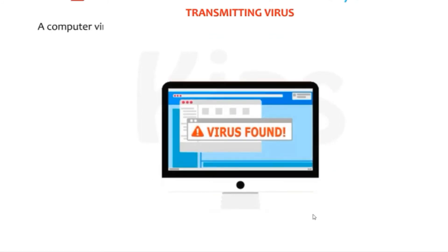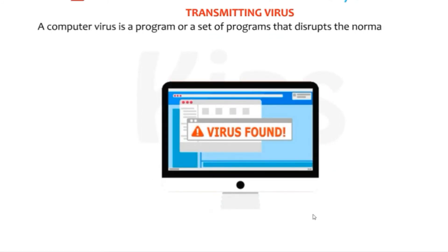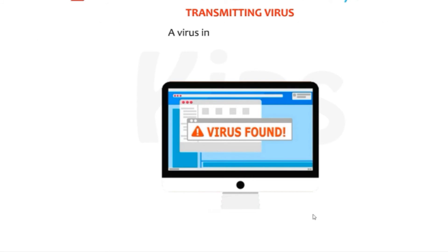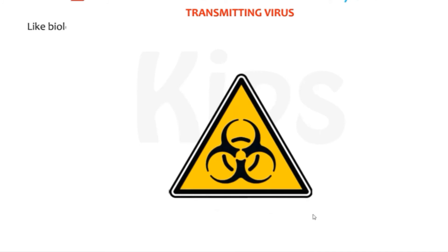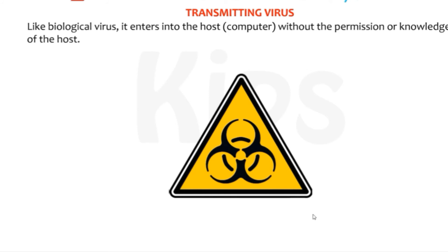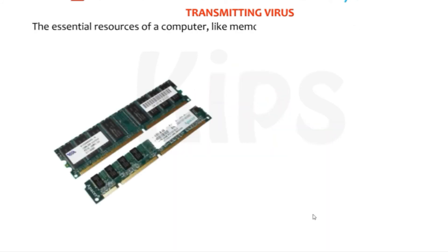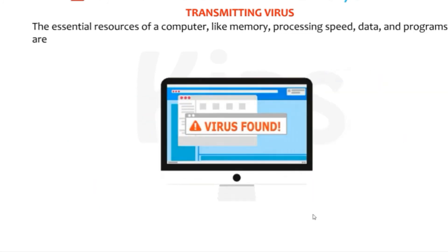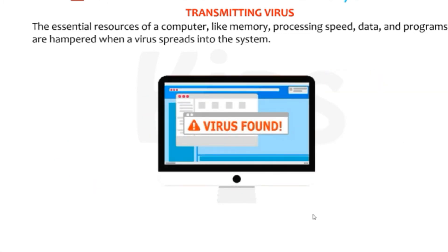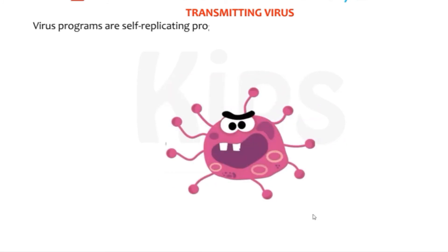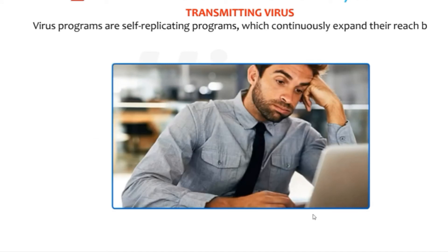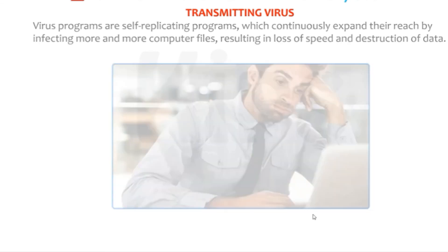Transmitting Virus — a computer virus is a program or a set of programs that disrupts the normal functioning of a computer. A virus infects or destroys data. Like a biological virus, it enters into the host computer without the permission or knowledge of the host. The full form of VIRUS is Vital Information Resources Under Siege. The essential resources of a computer like memory, processing speed, data and programs are hampered when a virus spreads into the system. Virus programs are self-replicating programs which continuously expand their reach by infecting more and more computer files, resulting in loss of speed and destruction of data.